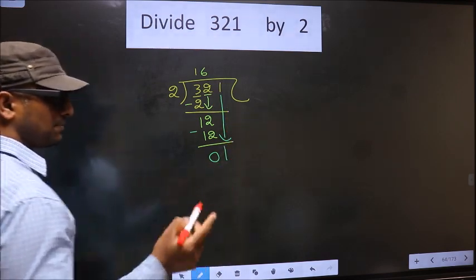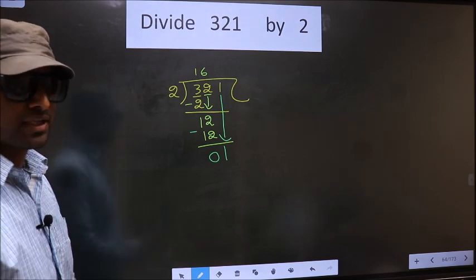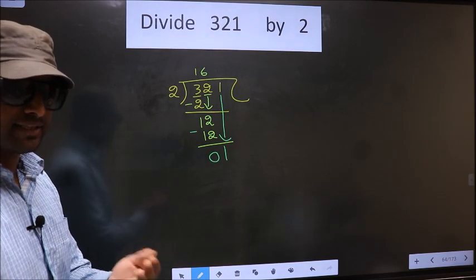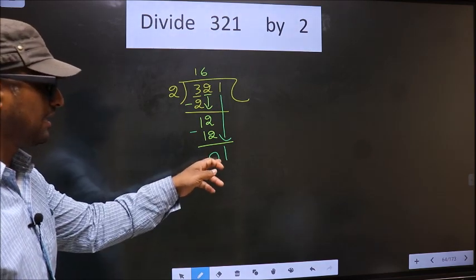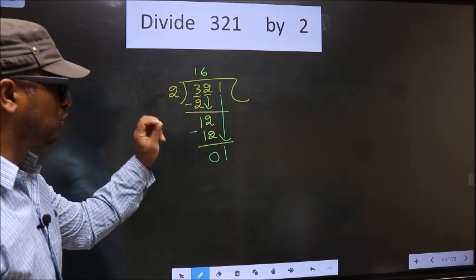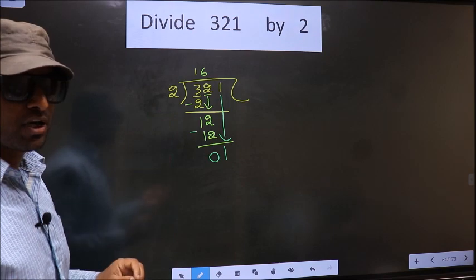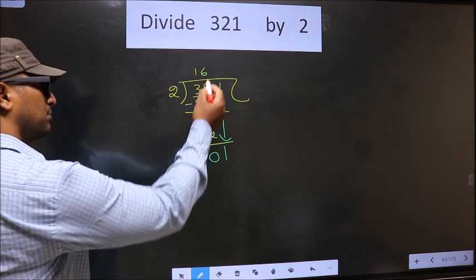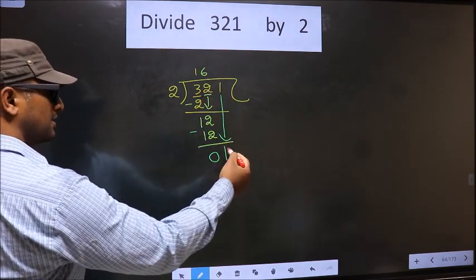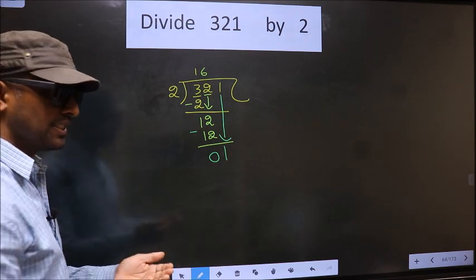And this is where the mistake happens. The mistake is this: here we have 1, here 2. 1 is smaller than 2. So what many do is they put a dot and take 0 here, which is wrong.